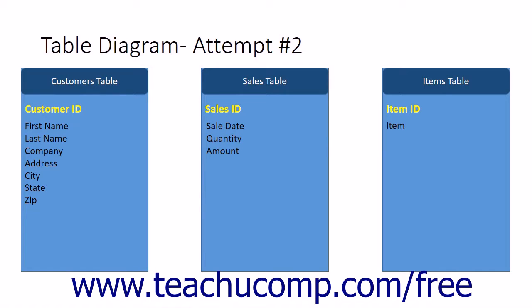It is important to note that the customer ID field added to the sales table is not a primary key — that table already has a primary key in the sales ID field, which uniquely identifies each sale like a receipt number. Technically, the field in the many table which makes a reference back to the primary key in the one table is called a foreign key. Its only purpose is to relate the two tables, and the values within a foreign key are almost always non-unique within the column. Don't worry about the mechanics of creating primary keys and table joins just yet — it will be explained in later lessons. For now, just try to comprehend the concepts and reasoning behind relational database design.